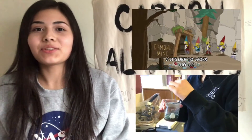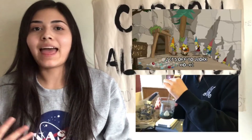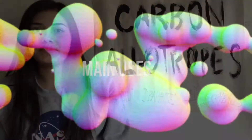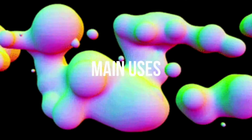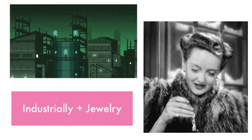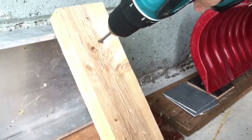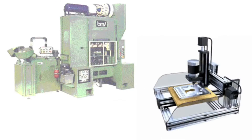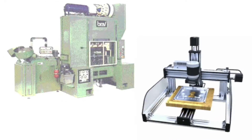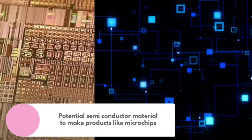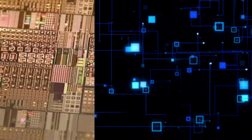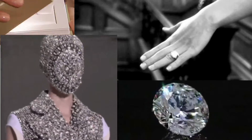Diamond is obtained by mining, including open pit, alluvial, and pipe mining, and synthetic diamonds can also be created in laboratories. Diamonds are used both industrially and in jewelry. Industrially, 80% of mined diamonds are used for cutting and drilling, where diamonds are embedded inside drill bits and saws to maintain sharpness. They're also used in grinding and polishing, where powdered diamonds are used. Diamond also has the possibility of being used as a potential semiconductor material to create products like microchips. Knowledge of diamonds can be applied to areas of study such as gemmology, jewelry, and construction.